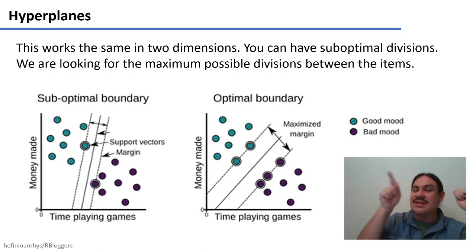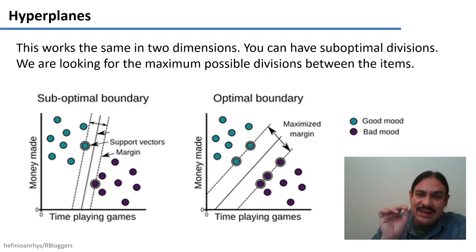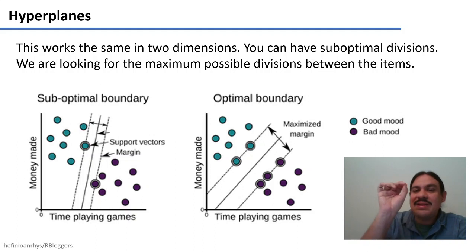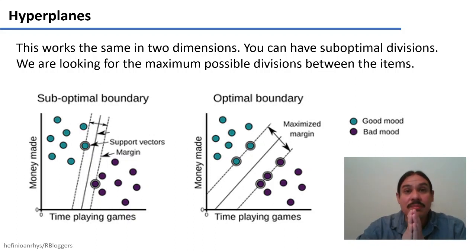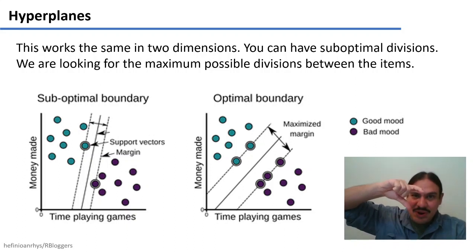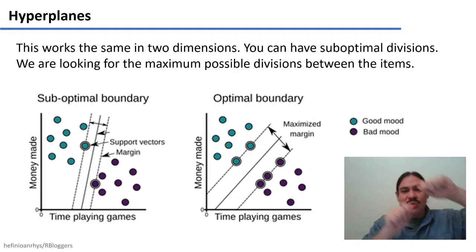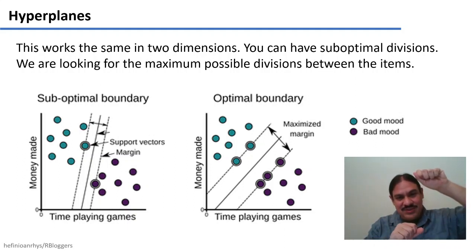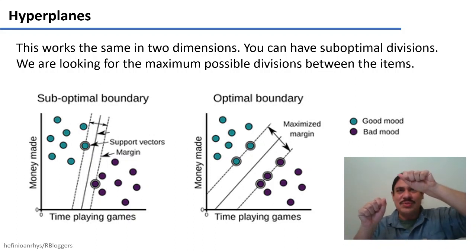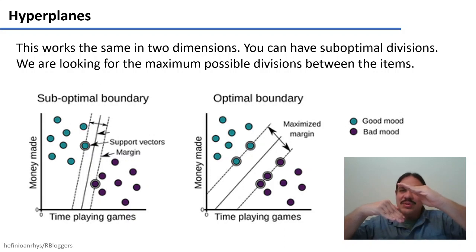The separation is right in the middle, so that in the future, if you have a purple dot that makes more money than the others, you can still classify it in the purple region, even if it's just a little bit below the margin. What we're actually looking to maximize is the margin — finding the dots that provide the maximum distance between the two boundary lines, one through the edge of the bad mood cluster and one through the edge of the good mood cluster. We want to find lines at the edges that are furthest apart, so it becomes an optimization problem.